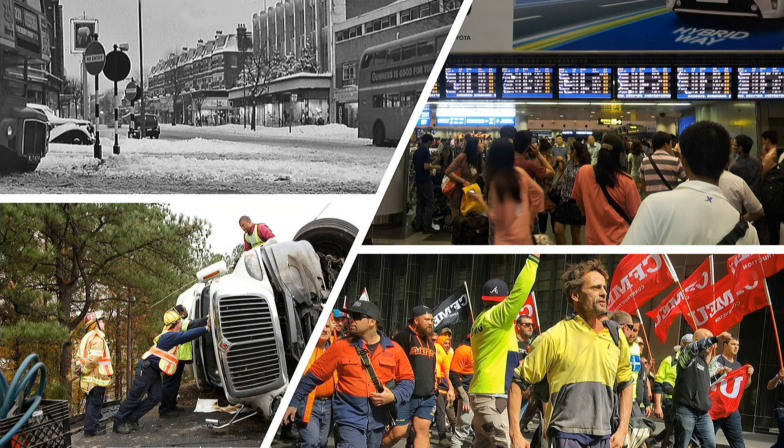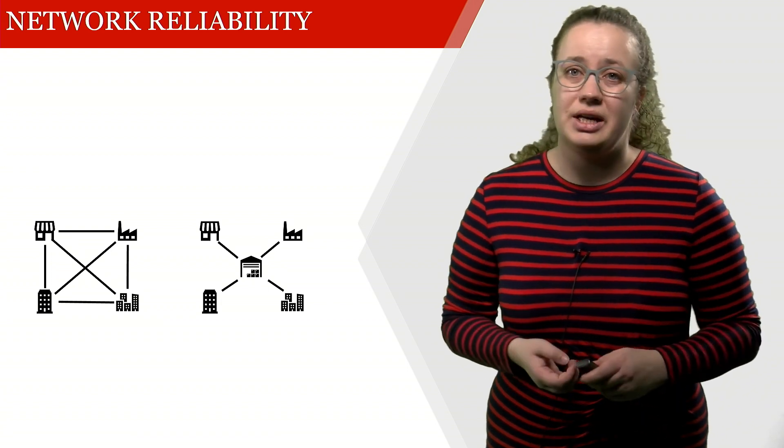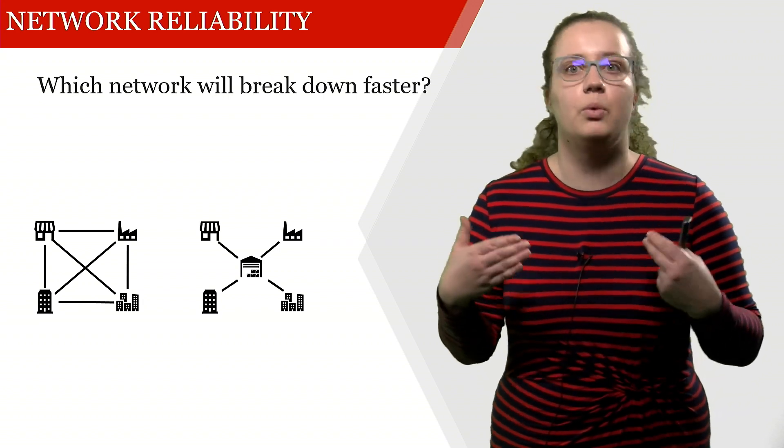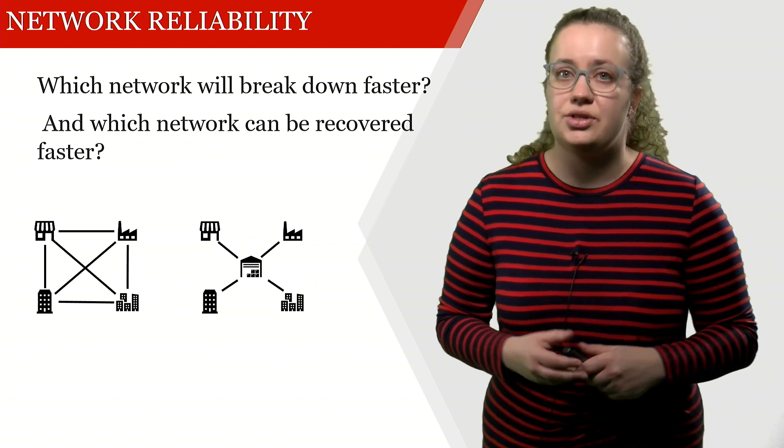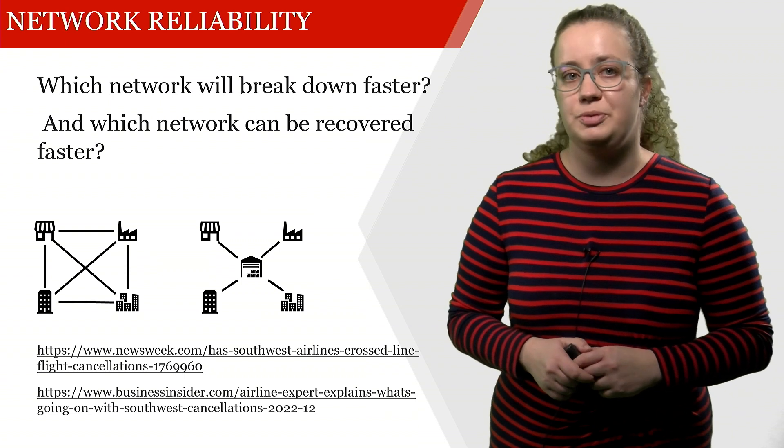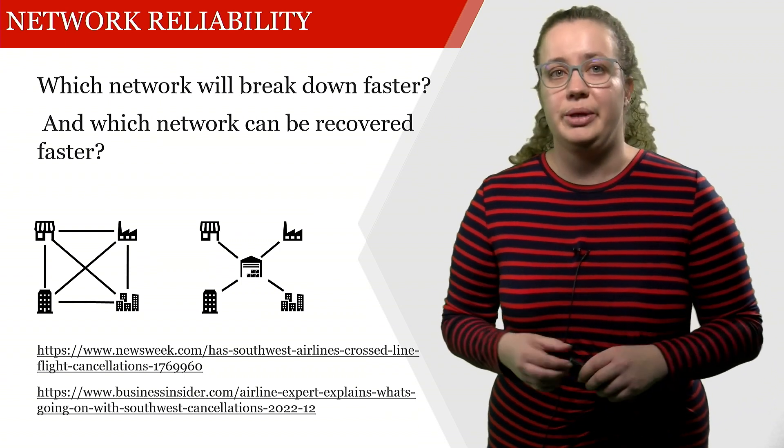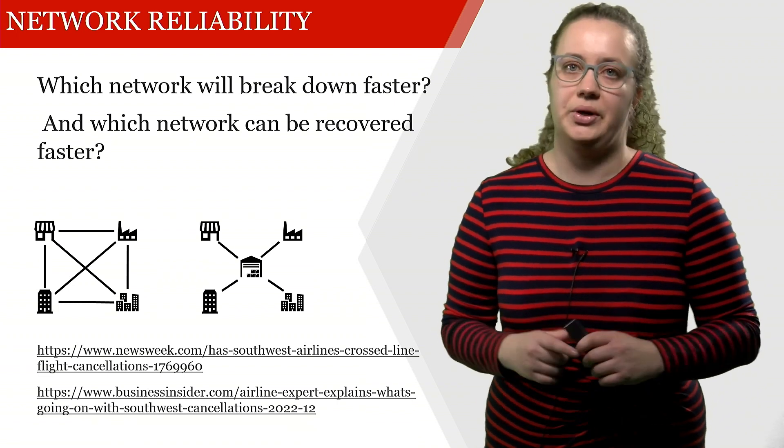Now we saw that these different networks differ in their cost structure. They also differ in how reliable they are. Just assume that there's a snowstorm hitting and all of a sudden trucks are delayed, if not actually involved in accidents. Or your employees go on strike and all of a sudden you have to cancel all of your flights. Then the question is which of these networks will break down faster or will be more reliable, so not break down as fast? And which of these networks can be recovered faster after a failure? What I'd like you to do is read these two newspaper articles and tell me which network will break down faster and which network can be recovered faster.